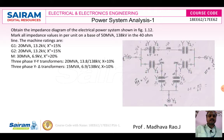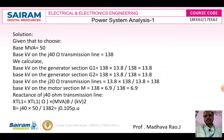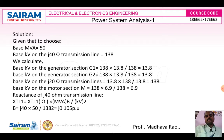First, we will determine the base values. The base value is 50 MVA as given in the problem. The base kV for the transmission line is 138 kV. We need to calculate the base voltage for generator 1, generator 2, the 20-ohm transmission line, and the motor.